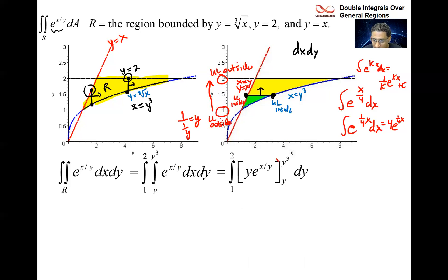Now remember, we are replacing x with y cubed and replacing x with y. We're replacing x with y cubed, then we'd have right here in the exponent y cubed over y. Well, that's y squared. And then the lower limit would be y over y. That's just going to be a one. And that's how we end up with our y squared exponent and one exponent.